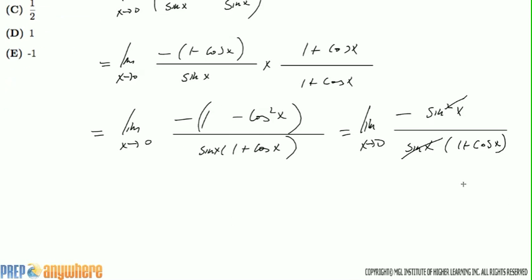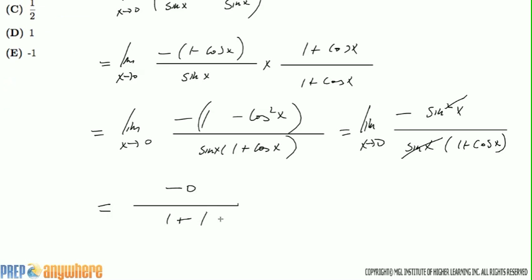So now you can see that cancels out. And as x approaches zero, the minus of sine x will approach zero on top. At the bottom, we get 1 plus 1. So the whole thing will approach zero.